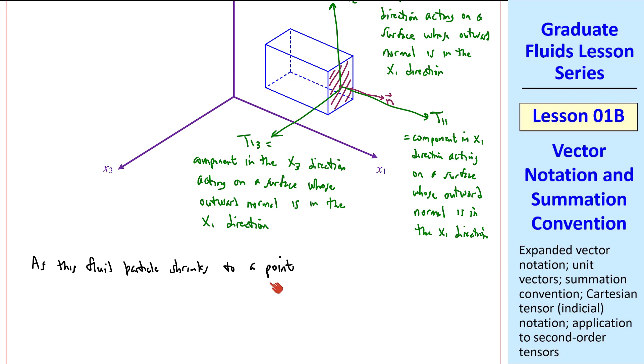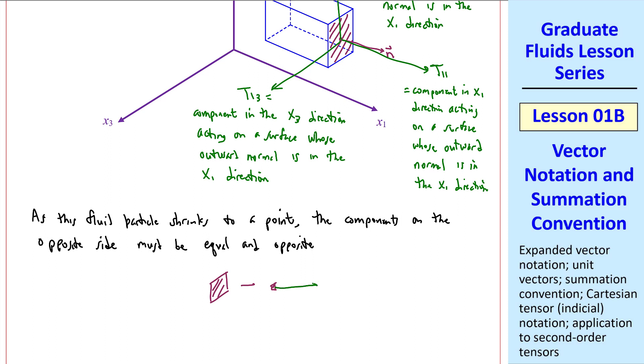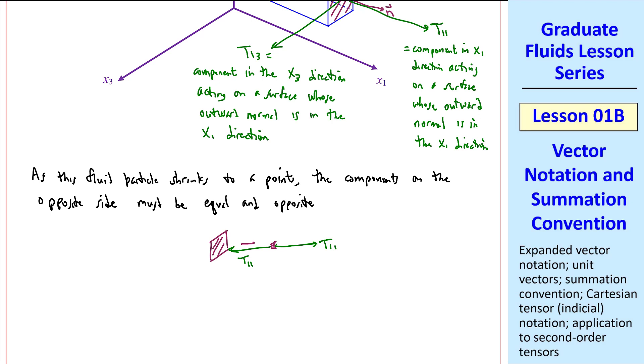As this fluid particle shrinks to a point, and recall that we define vectors and tensors at a point in the flow, the components on the opposite side of the element must be equal and opposite. What we're saying is that this component on the other side of the fluid element, which is now just a point, has to be equal in magnitude but opposite in direction. That is true not just for this normal component, but also for the tangential components, t13 and t23.